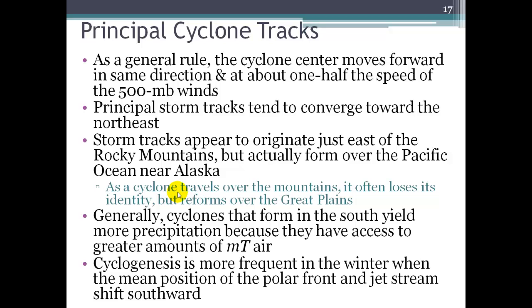Typically, cyclones that form in the south have more moisture in them because they have access to that maritime tropical air. And cyclogenesis is more frequent in the winter, when we have the biggest difference between cold air and warm air, and that polar jet really drives weather for us in the United States.